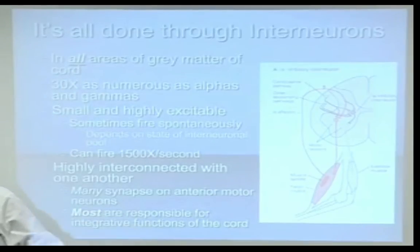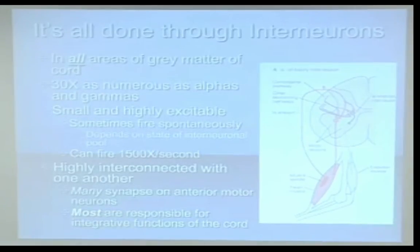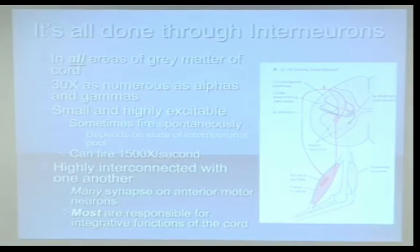White matter is white because it's myelinated. What is white matter? It's axons — that's what you're looking at. There are no cell bodies in there, it's just axons. Not all of them are myelinated; there are some unmyelinated ones in there, but it's just axons.